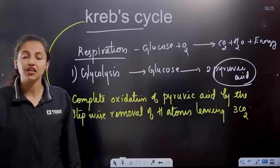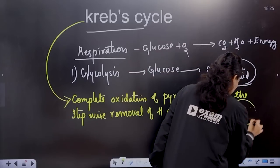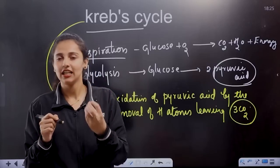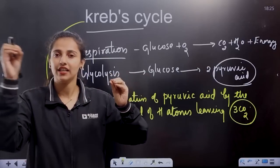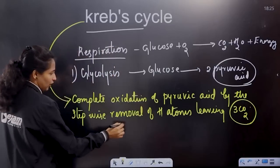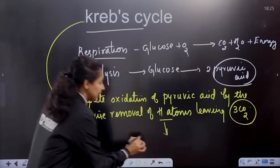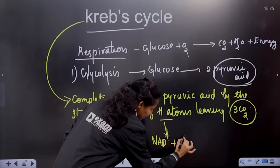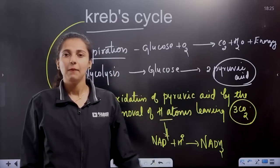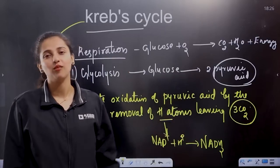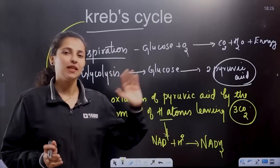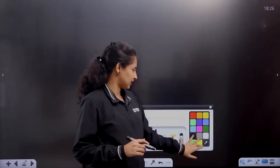In each step, we remove one hydrogen atom. When we remove hydrogen atoms, we form NADH2, which is an energy-rich compound. We also remove carbon dioxide atoms stepwise. Now let's go to the Krebs cycle.